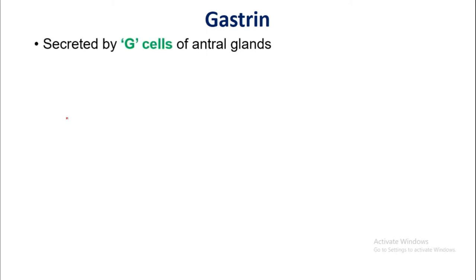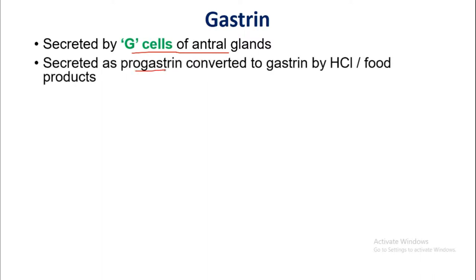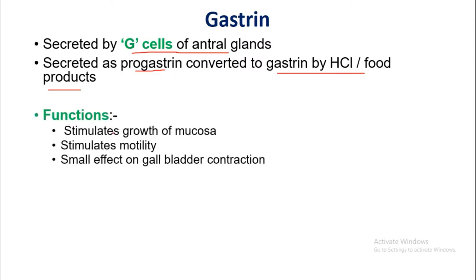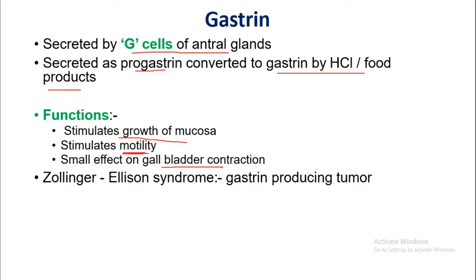Gastrin is a hormone secreted by G cells directly into the blood. Via the blood it acts on the stomach. It is secreted by G cells of the enteral glands as progastrin, which is converted to gastrin by HCl and food products. Functions of gastrin: it stimulates growth of the mucosa, stimulates motility of the stomach, and has a small effect on gallbladder contraction. Zollinger-Ellison syndrome is a gastrin-producing tumor resulting in high levels of gastrin in the blood.